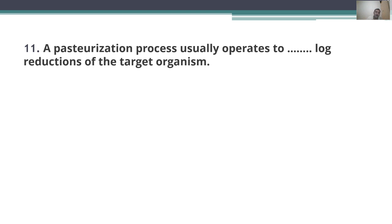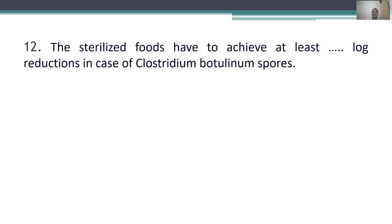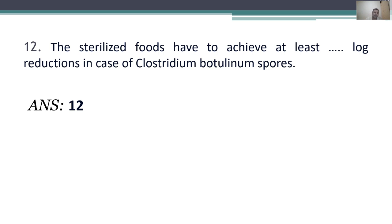Eleventh question: a pasteurization process usually operates to 6 log reductions of the target organism. Sterilized foods have to achieve at least 12 log reductions in the case of Clostridium botulinum spores. According to government agencies, we need to reduce the amount of Clostridium botulinum to 12 log reductions in order to pass the required test.